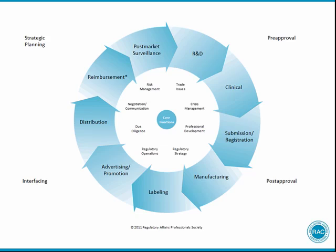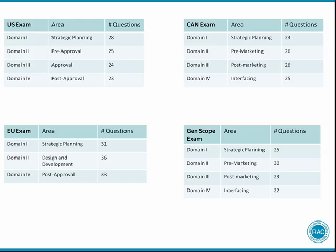In addition, other core functions of the regulatory professional include due diligence, crisis management, regulatory intelligence and strategy, trade issues, and negotiations. In developing the RAC examinations, these roles are organized into major areas called domains, which largely reflect stages in the product lifecycle from strategic planning through pre- and post-approval tasks. The domains of the RAC exam's content are shown here, along with the number of questions on each area. A detailed outline of the areas covered within each domain is available in the RAC Candidate Guide. It is important to note that examination questions relate to the tasks presented in these outlines; however, there is not always a question for each specific task listed in the content outline.